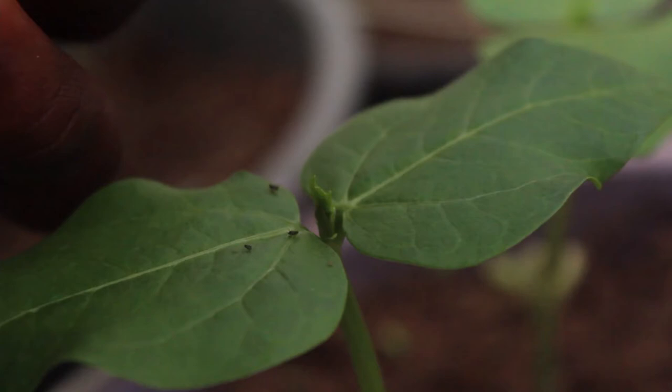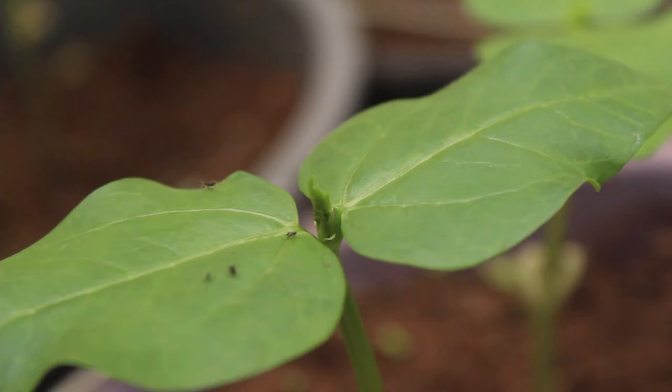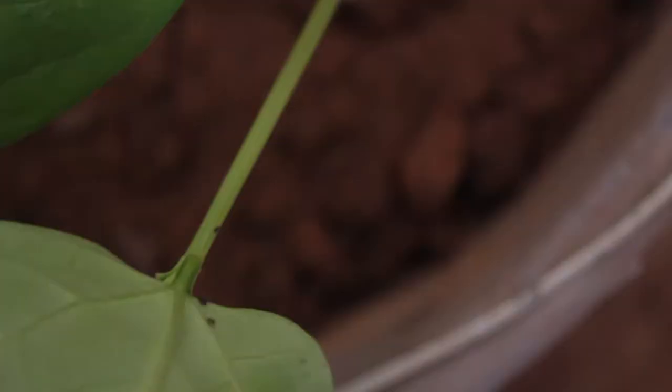A brush is used to pick the aphids and gently place them on the leaves. These aphids often move and hide under the leaves where they start feeding on the seedlings and multiply.